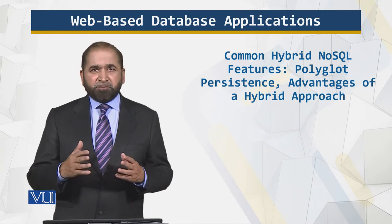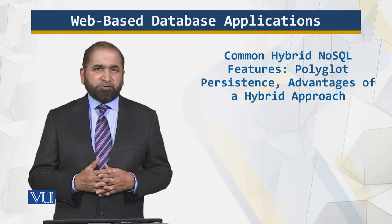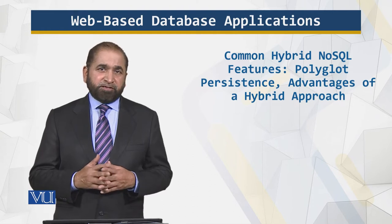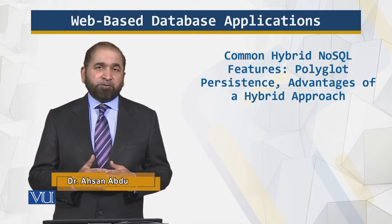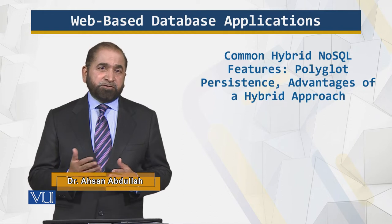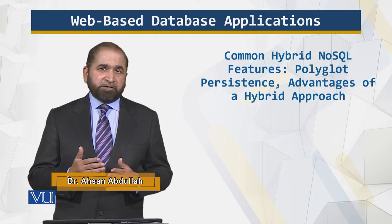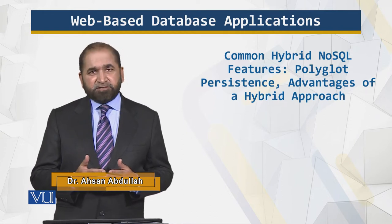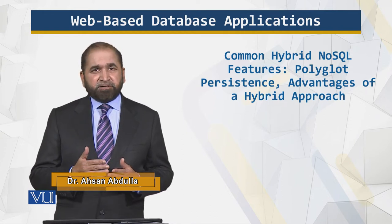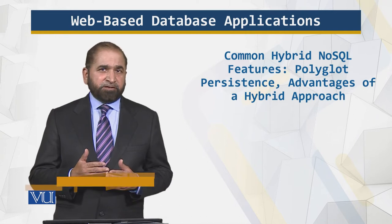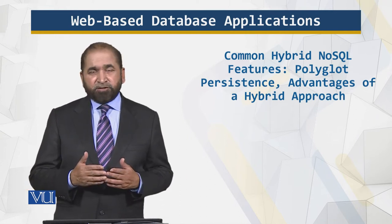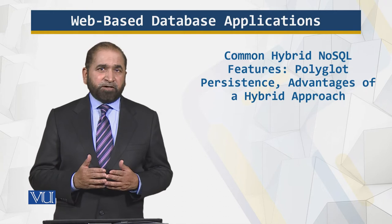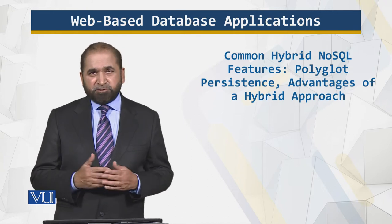A problem can be solved using different approaches or different data structures. For example, a problem might be solved using a key linking feature. It can be solved using triples, or a document-based solution, or a big table-based solution. So, there are a number of ways of solving a problem.